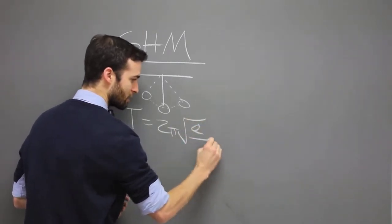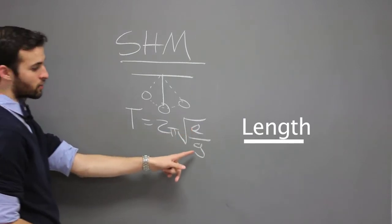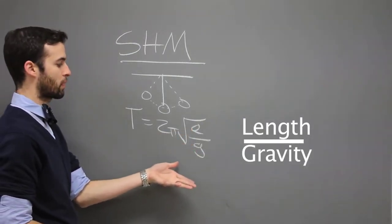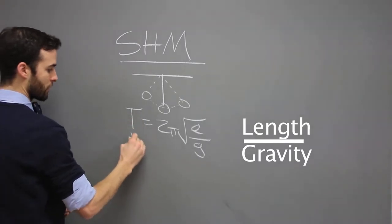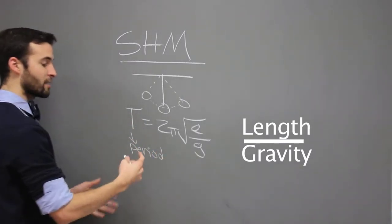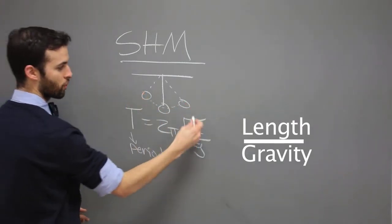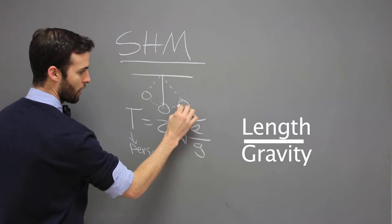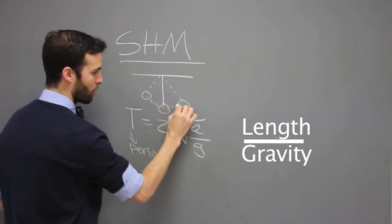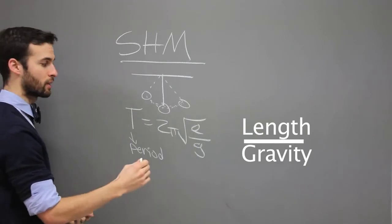One is the length of the string, and two is the gravity under which it is influenced by. Now, this T here is period, and that is the time it takes to get back to its original position. So if I start the timer here, I swing and come back, and that instant is the time it takes, or the period.